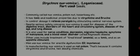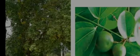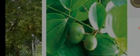Coming to the first plant, Strychnos nux vomica — it belongs to the family Loganiaceae and the part used is seeds. Now this is the tree of Strychnos nux vomica.